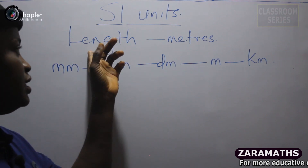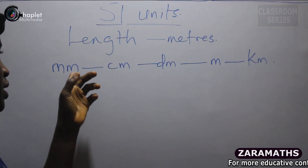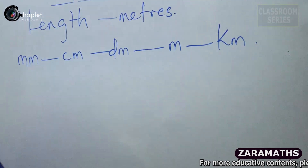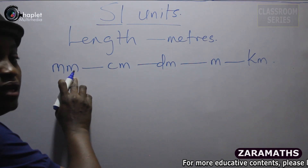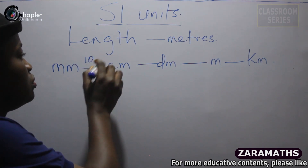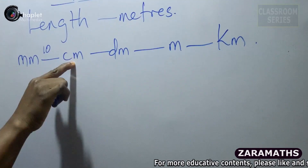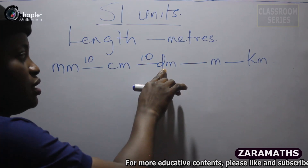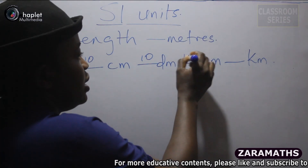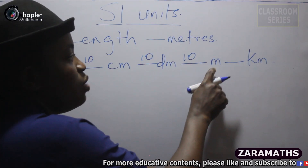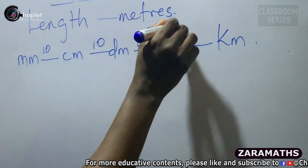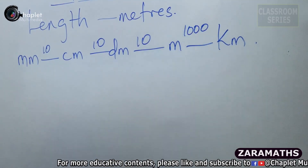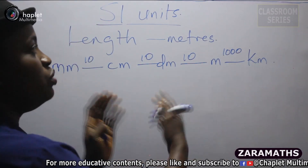Other units for measuring length are millimeters, centimeters, decimeters, and kilometers. You know that 10 millimeters makes one centimeter — 10 of this makes one of these. 10 centimeters makes one decimeter, then 10 decimeters makes one meter.